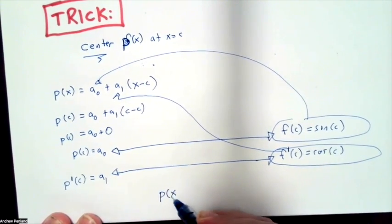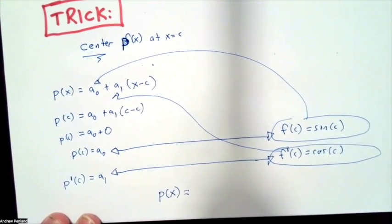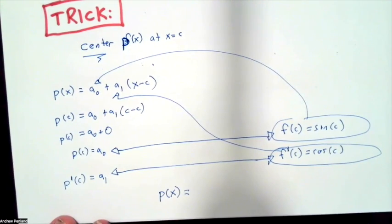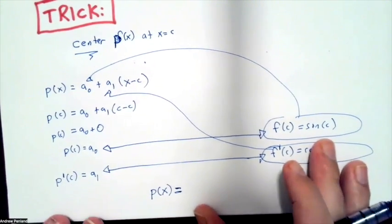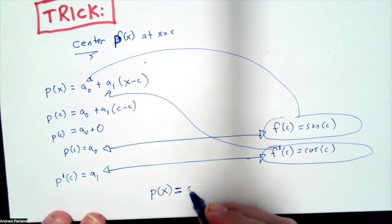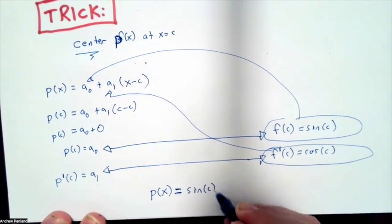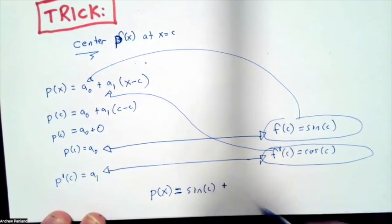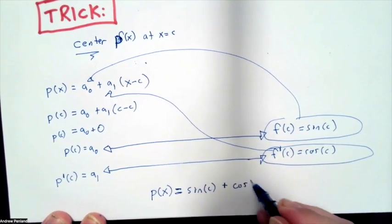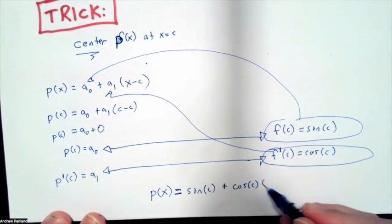And this enables me to find the formula for my polynomial, which will be p of x is equal to sine of c plus cosine of c times x minus c.